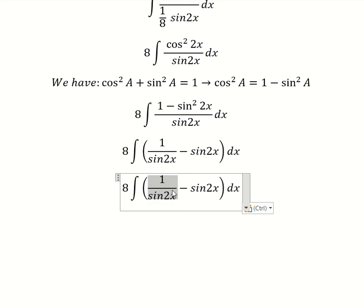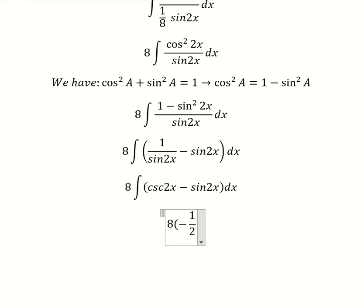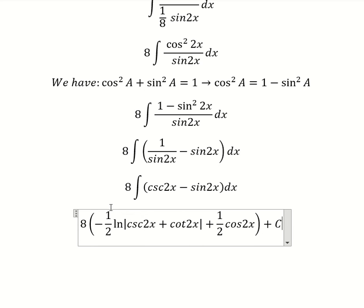This one is about cosecant of 2s and now we have the final answer. The integration of this one we have negative one over two ln of the absolute value of cosecant of 2s and cotangent 2s. The next one is about positive one over two cosine 2s and we put about C.